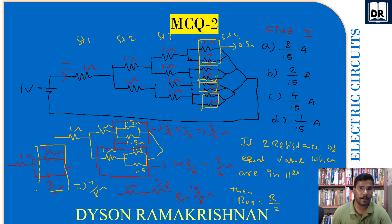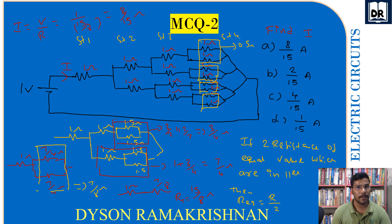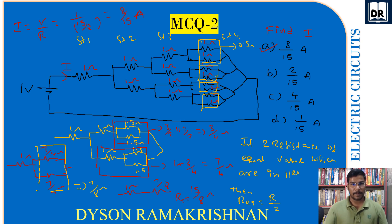The equivalent resistance for all four stages is 15/8 ohm. We find the current: I = V/R = 1 ÷ (15/8) = 8/15 ampere. So option (a) 8/15 ampere is the correct answer.